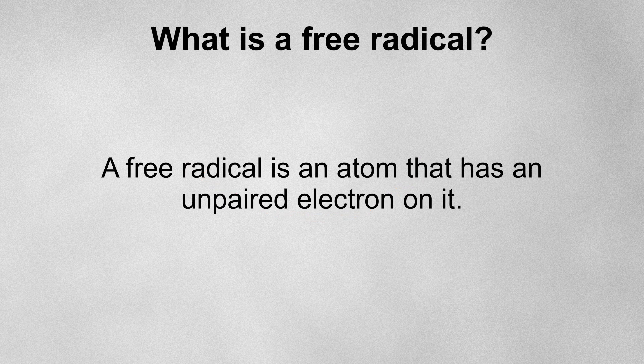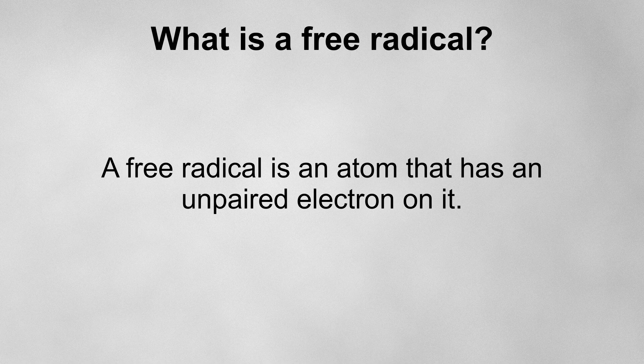Sometimes, we might want to show the movement of a single electron. We represent this with a curly half-arrow. We would only use this when free radicals are involved. A free radical is an atom that has an unpaired electron on it. I'll show you how they can form.